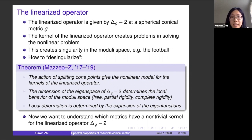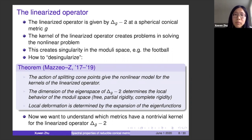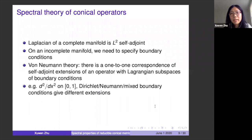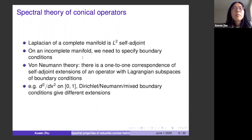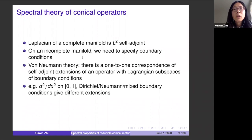This is why we want to understand which metrics have a non-trivial kernel for the linearized operator, and moreover we want to understand the expansion of the eigenfunction, because that tells us how you can deform it. But Δ_G is a singular operator since G is a conical metric. As everyone here knows, the Laplacian for a complete manifold is an L² self-adjoint operator automatically. However, on an incomplete manifold we need to specify boundary conditions. Here we have conical singularities, which is an incomplete manifold, so we must impose boundary conditions before we can talk about self-adjointness and spectrum.